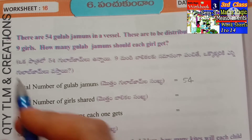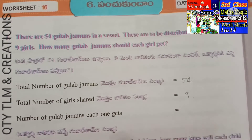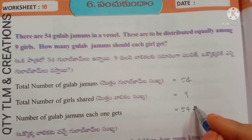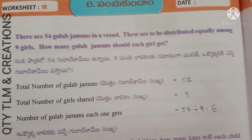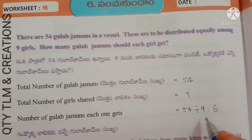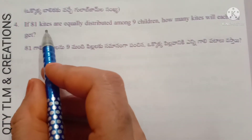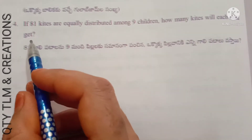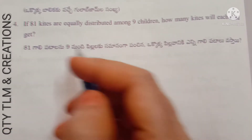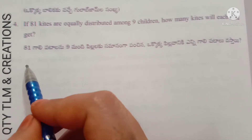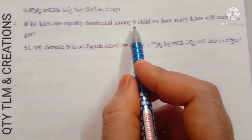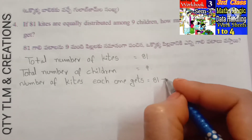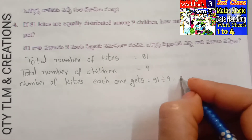Next: total number of gulab jamuns — each one gets 54 divided by 9, which equals 6 gulab jamuns each. Next question: if 81 kites are equally distributed among 9 children, how many kites will each child get? Total kites: 81, total children: 9. Each child gets 81 divided by 9 = 9 kites.